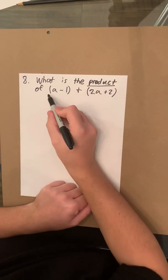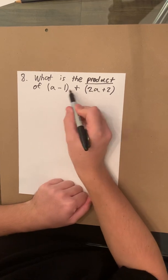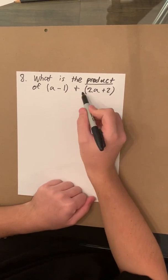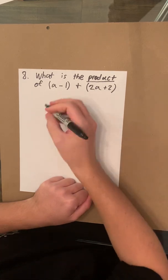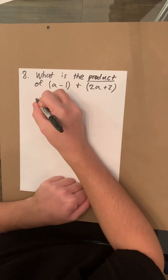And it also kind of gives it away with the parentheses. Anything with two parentheses touching without a sign in the middle means it's going to be multiplied. So we're going to rewrite it down here.